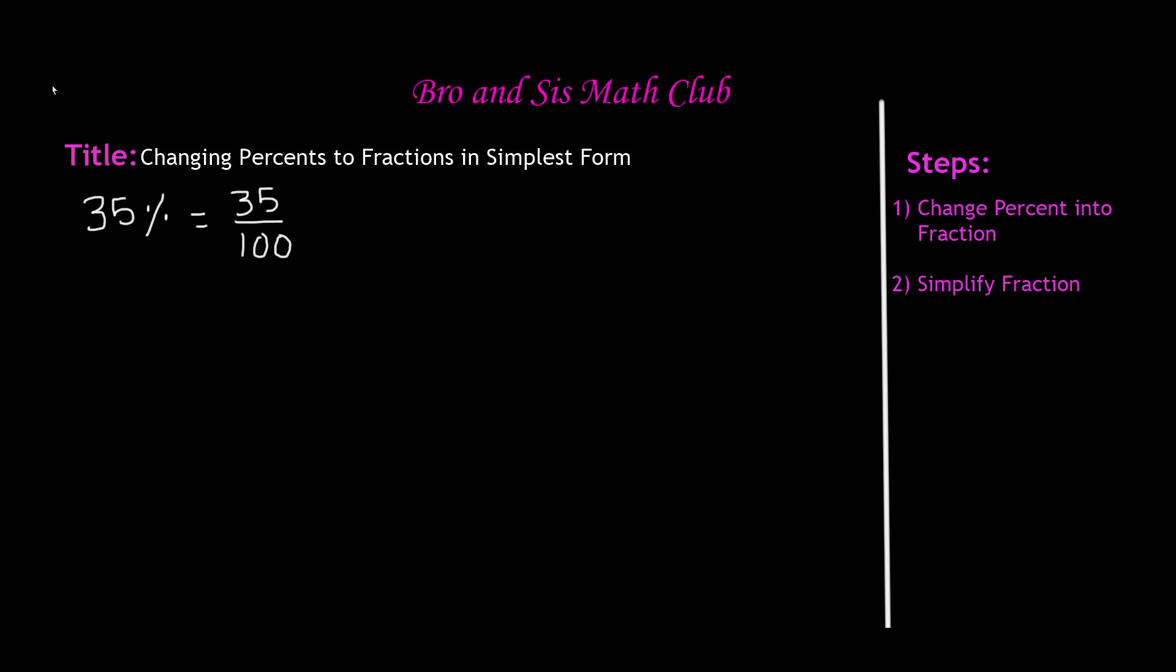Step two says to simplify the fraction. Now simplifying, another term that you could use is dividing. So what we're doing is we're trying to divide both the numerator and the denominator by a number that both are divisible by so that we can reduce it to its simplest form.